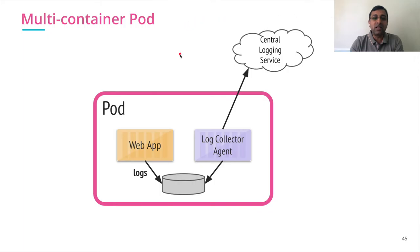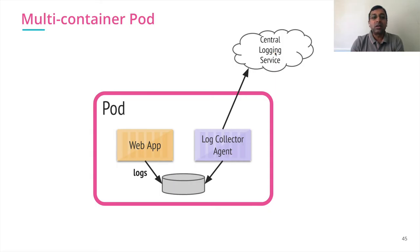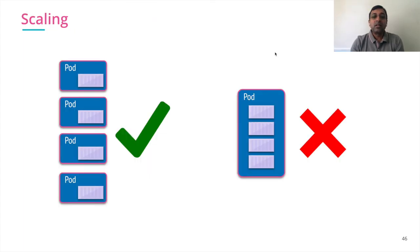If you have multiple containers running inside a pod, consider this example: a web application and a log collector agent are two containers running inside a pod. The web application writes log messages to a shared file system, and the same file system is available to the log collector agent, which reads the logs and sends them to the central logging service. This specific pattern is called the sidecar pattern. To scale an application within Kubernetes, the right way is to have multiple pods for the same type of application running in the cluster, which can be scheduled on different nodes.